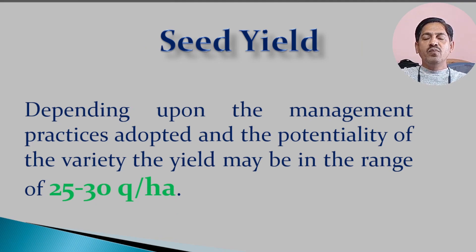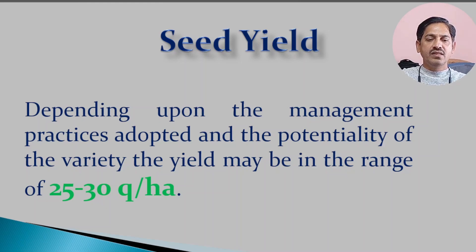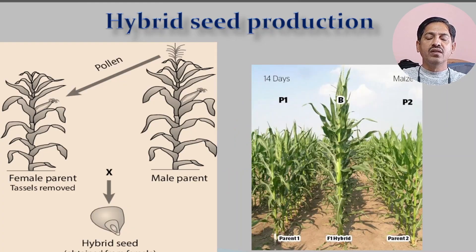Regarding seed yield, in the case of open pollinated varieties you can obtain 25 to 30 quintals of yield per hectare if you manage the crop very well. This covers open pollinated varieties — synthetics and composites. Now let's discuss what care must be taken during the second type of seed production, which is hybrid seed production in maize.